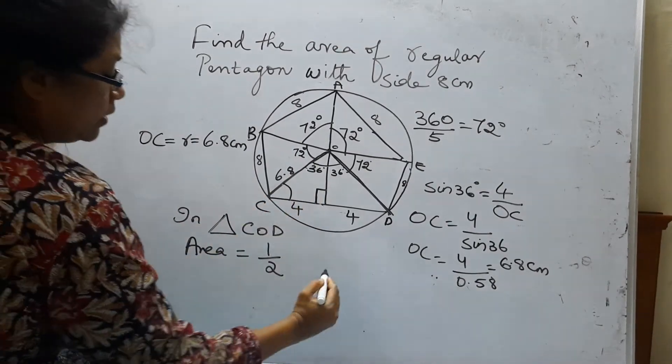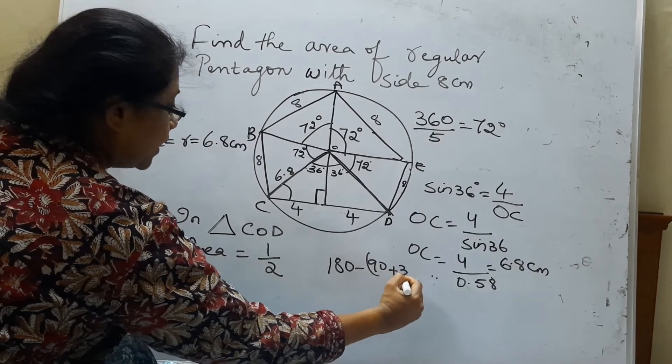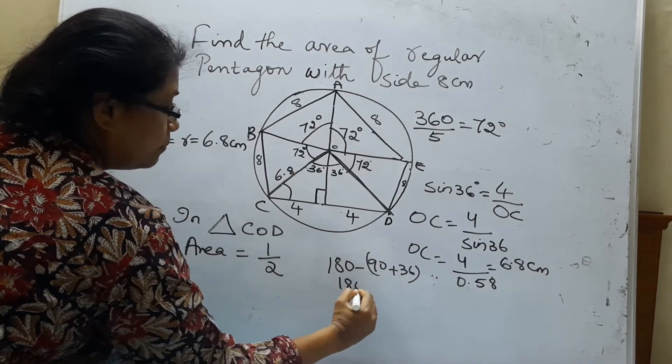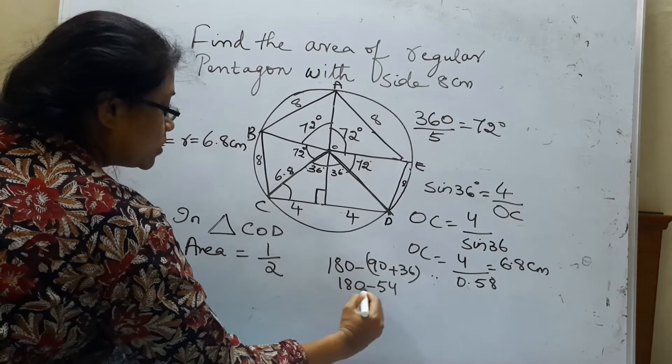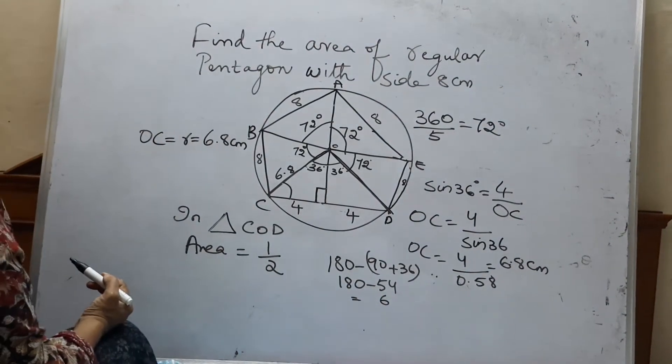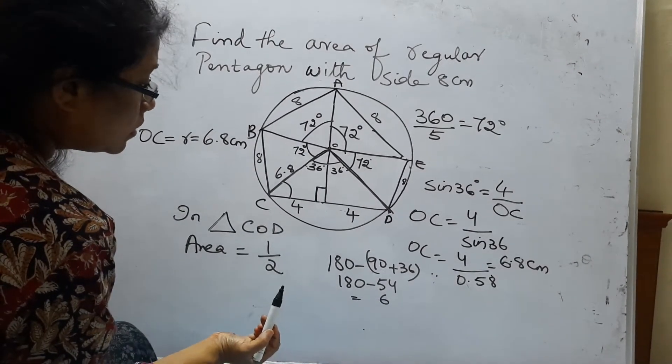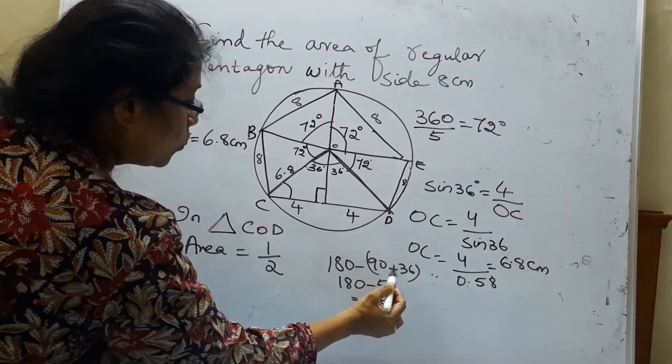And this would be how much? It is 180 minus 90 plus 36. Which is 180 minus 54. How much is this? Am I right?